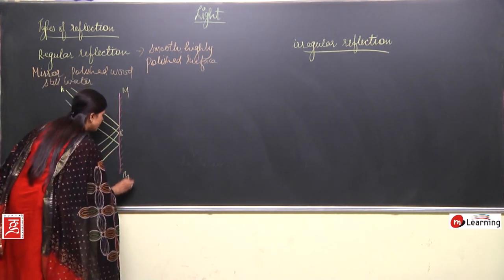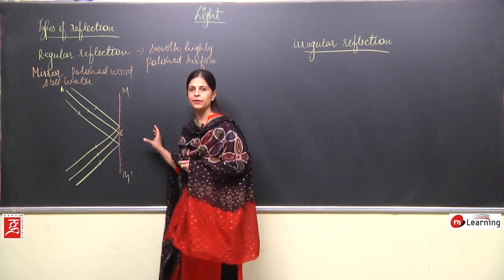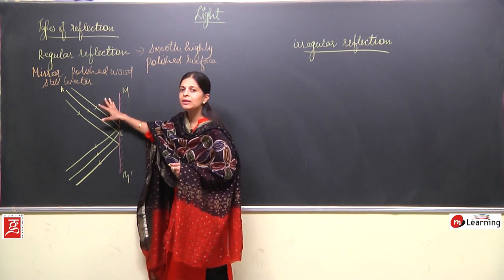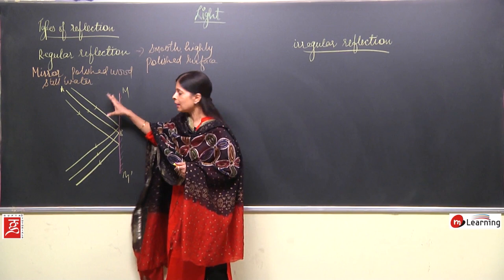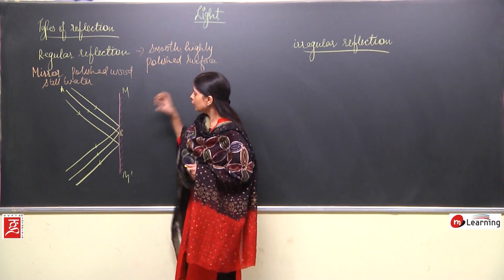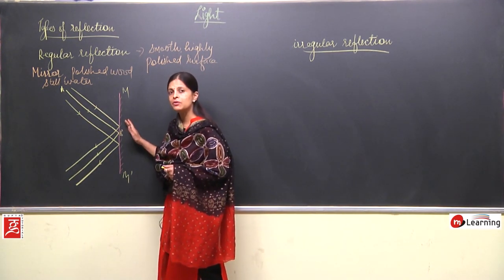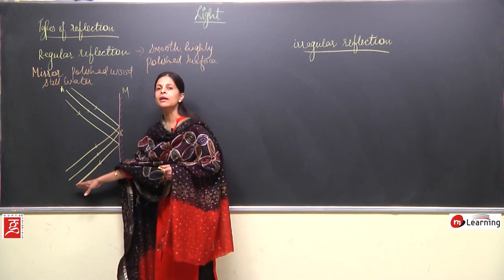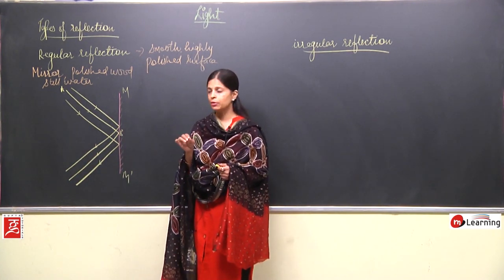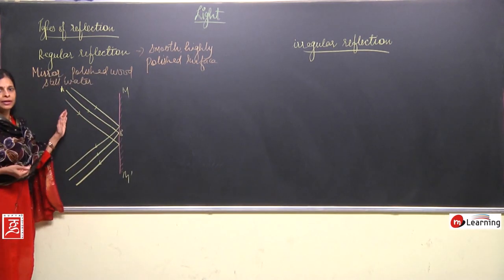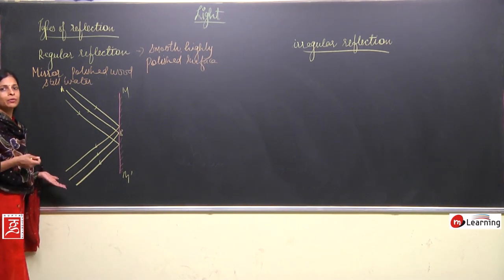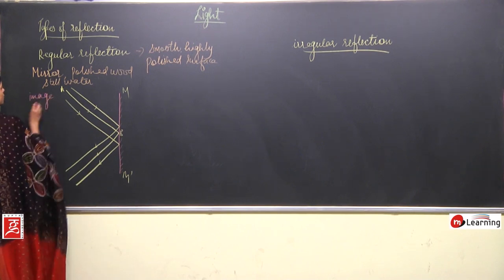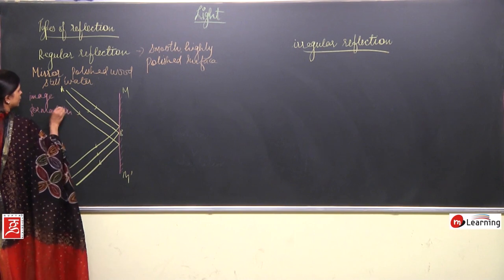This can be labeled as MM dash. Now, what is actually happening in regular reflection? When a beam of rays falls on this reflecting surface, the rays are parallel to each other. Their incident angles are all equal. After falling on the reflecting surface, all these rays reflect back in a parallel way and in one particular direction. This is a very important point — the reflected rays are parallel and in one particular direction, and that is the reason image formation takes place.